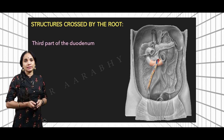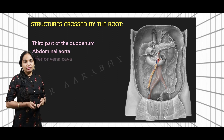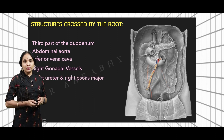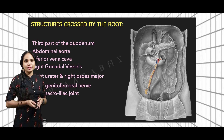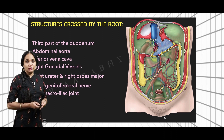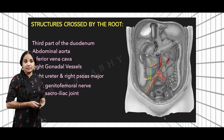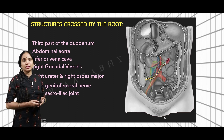The root of the mesentery first crosses the third part of the duodenum, as can be seen in the diagram. The next structure is the abdominal aorta, followed by the inferior vena cava. Then we have the gonadal vessels, the right psoas major, and the right ureter. Lastly we have the genitofemoral nerve and the right sacroiliac joint. A schematic diagram shows these structures more clearly: third part of the duodenum, aorta, inferior vena cava, right gonadal vessels, right ureter, right psoas major, genitofemoral nerve, and the right sacroiliac joint.